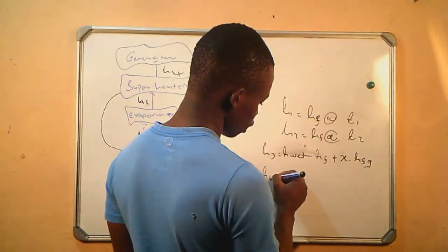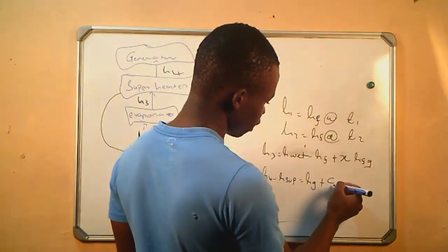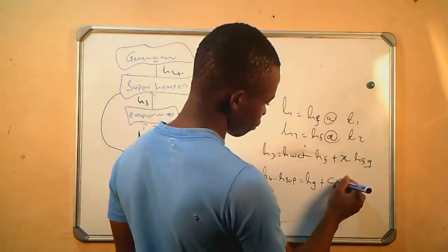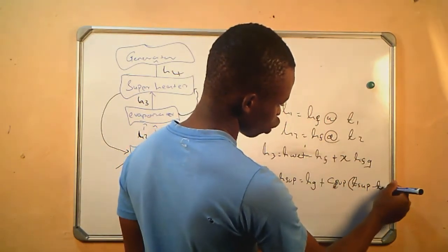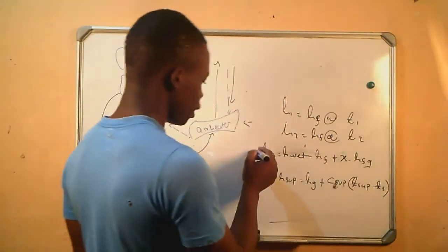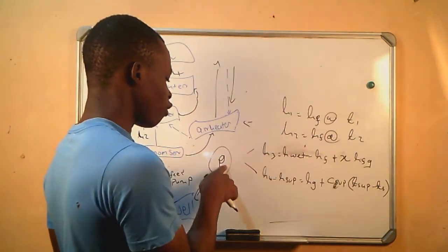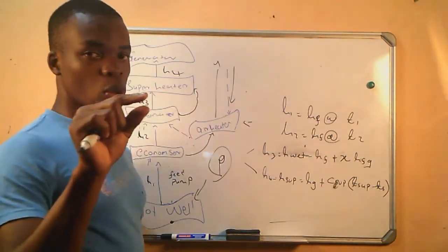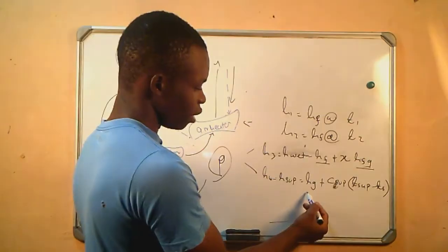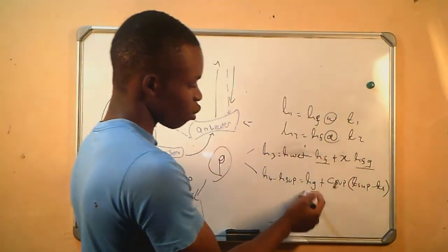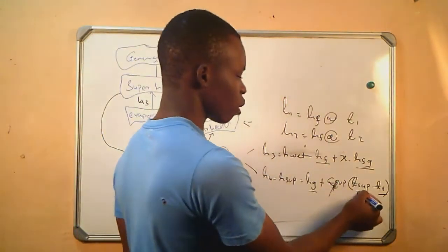H4 equals H-superheated, which is HG plus the specific heat capacity of the superheated steam, in brackets T-superheated minus the saturation temperature. You will use the pressure to get the values from the steam table. If you are given the pressure, you look for that pressure in the steam table; in the corresponding row you extract the value of HF and HFG. Similarly, you extract the value of HG and TS. The specific heat capacity of the superheated steam and T-superheated should be given to you.